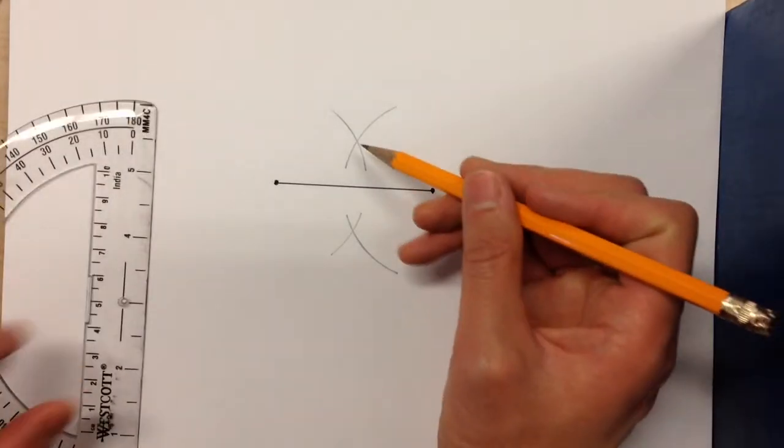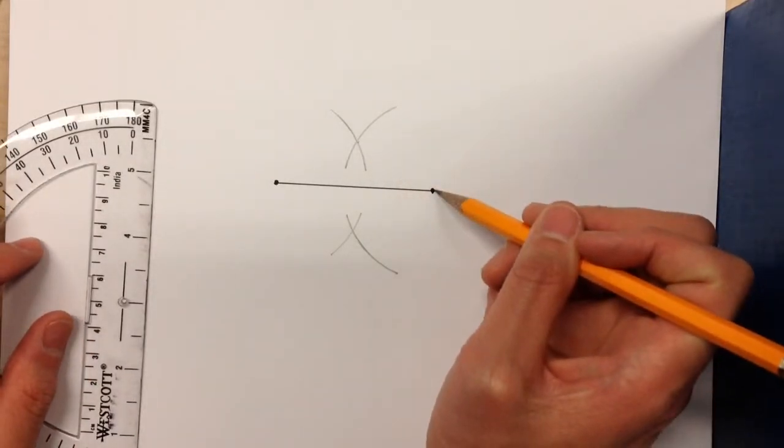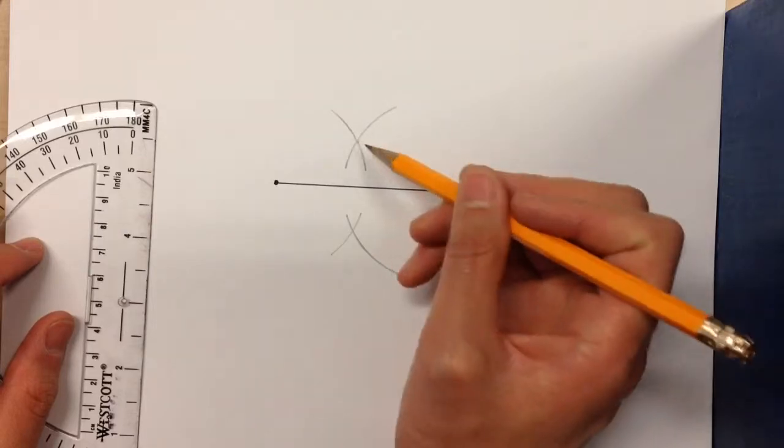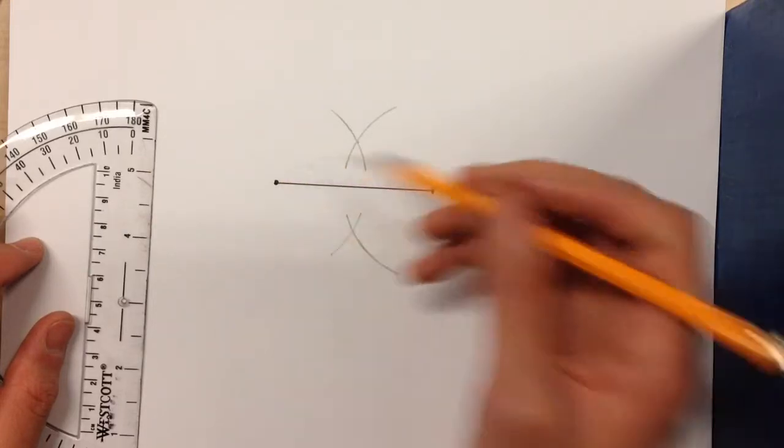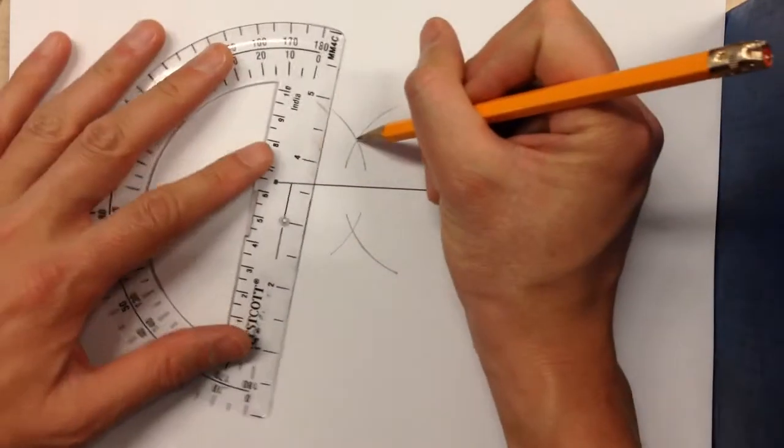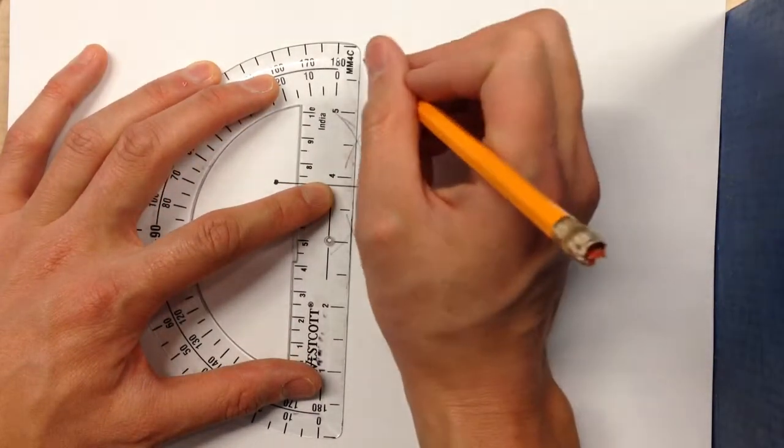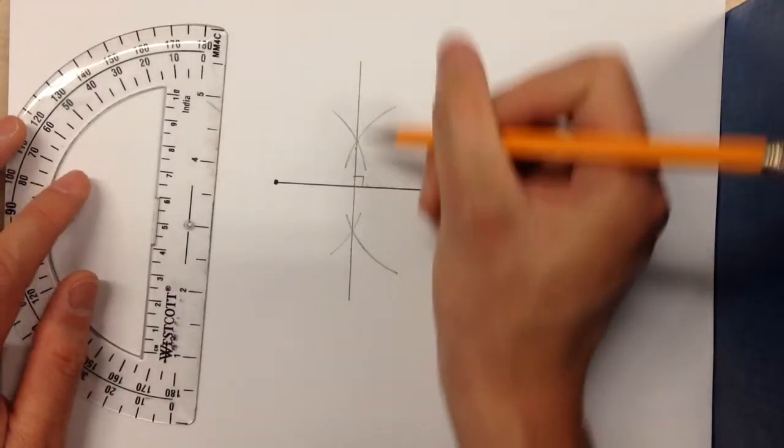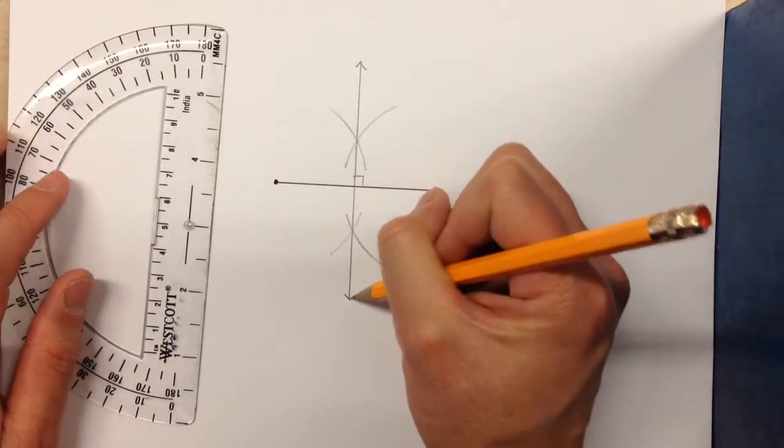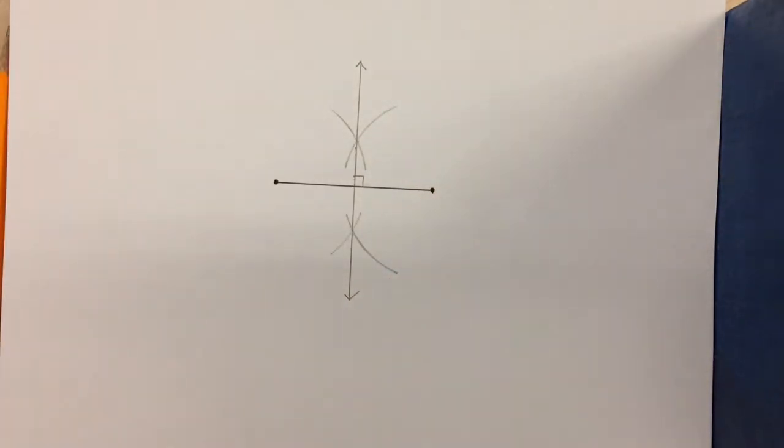Now, because this point is equidistant from this line segment point as it is from this, same with down here, I know the perpendicular bisector is going to go through those points. There's my perpendicular bisector, and I'm done.